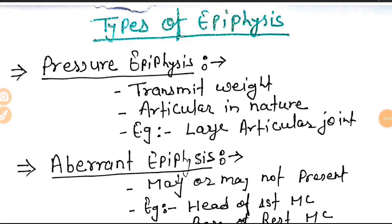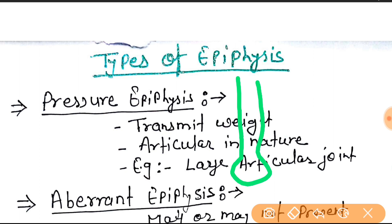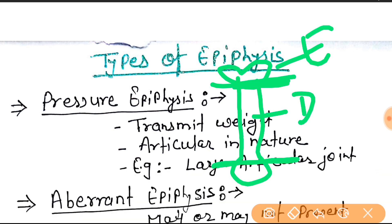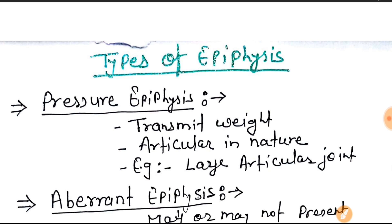Types of epiphysis. First of all, what is epiphysis? If we assume it is the bone, then the epiphysis is the terminal part. In simple language, the terminal part is the epiphysis, and the diaphysis is the shaft. Between them is the growing plate, known as the metaphysis.